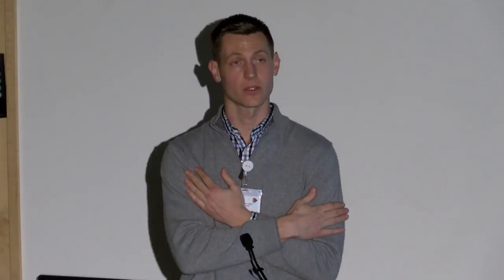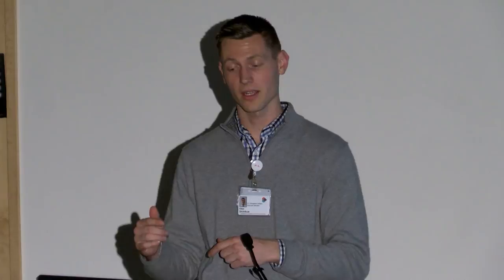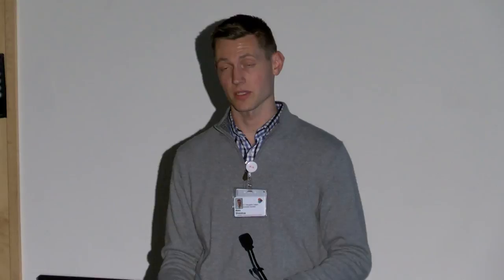Basic components of a halo orthosis are a halo ring, distraction rod, and a distal padded vest. Four pins are placed equally around the skull at specific landmarks to avoid the sinuses and temporal nerves, completely immobilizing the head. For pediatric patients we may use more pins and reduce pressure per pin — we want 32 newtons per square inch total around the circumference of the head, so with four pins that's 8 per pin; with six pins we distribute that amount accordingly. Once the halo pins and vest are secured, radiographic images are taken to ensure appropriate spinal alignment. When it comes to whether a patient can use an orthosis by themselves, it is never more important than with a halo — do they have someone who can help?